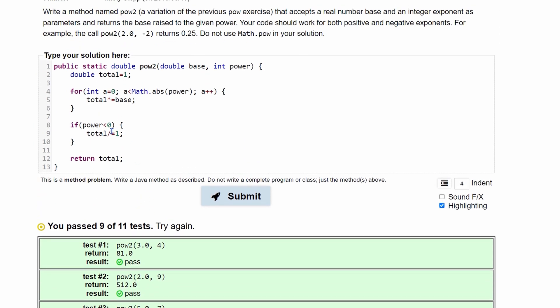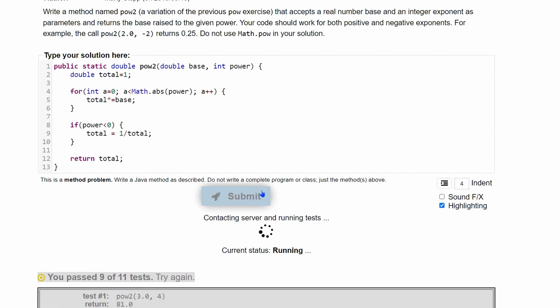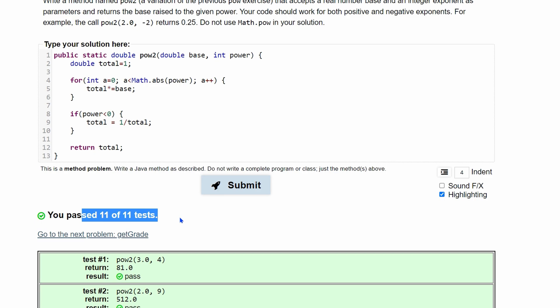It seems like this is incorrect, because of what we have right here. Divides equal, I guess it doesn't work correctly. So if you just do total is equal to 1 divided by the total, and try it again, we'll pass 11 out of 11 tests.